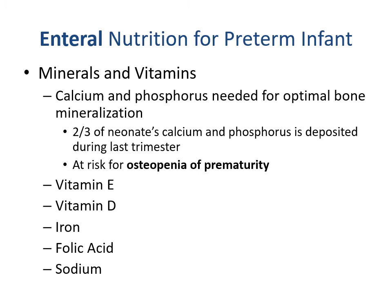Calcium and phosphorus are needed for optimal bone mineralization. Two-thirds of a neonate's calcium and phosphorus is deposited during the last trimester, so more premature infants are at risk for osteopenia of prematurity. We also monitor and likely need to supplement vitamins E, D, iron, folic acid, and sodium.